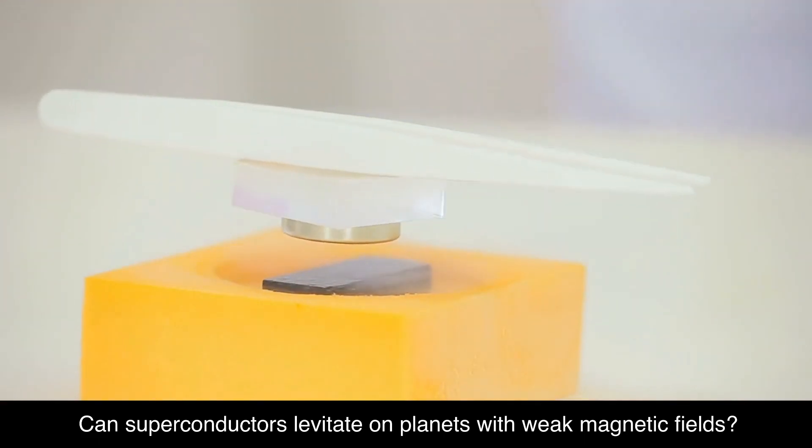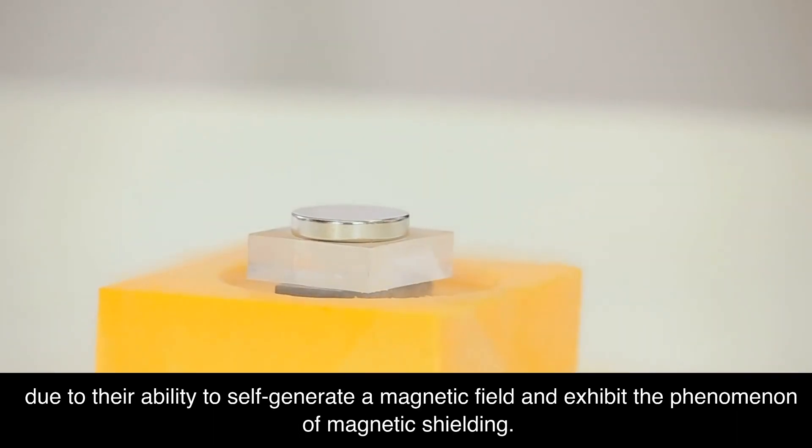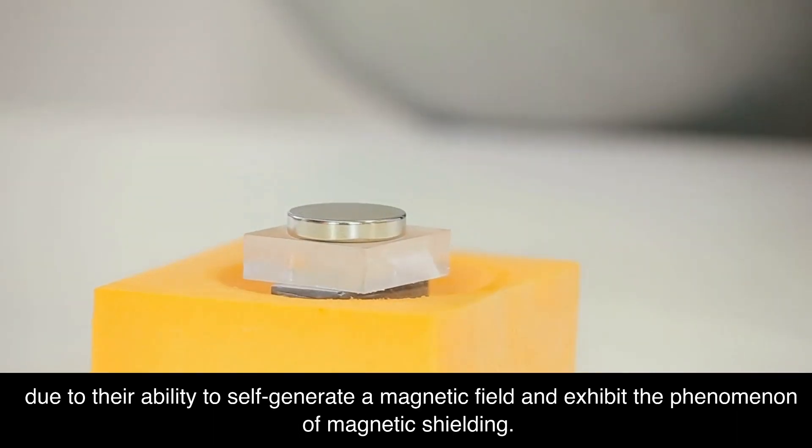Can superconductors levitate on planets with weak magnetic fields? Superconductors can achieve levitation even in environments with relatively weak magnetic fields on a planet's surface due to their ability to self-generate a magnetic field and exhibit the phenomenon of magnetic shielding.